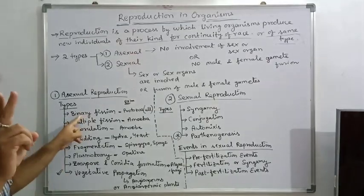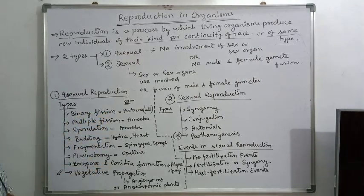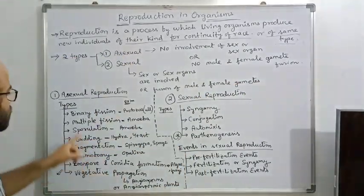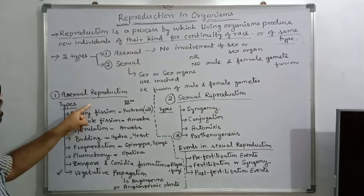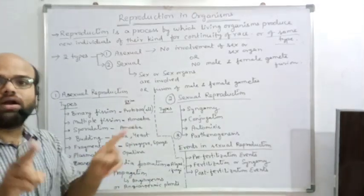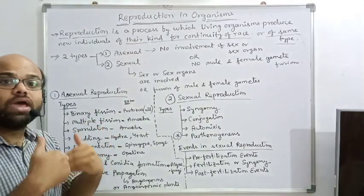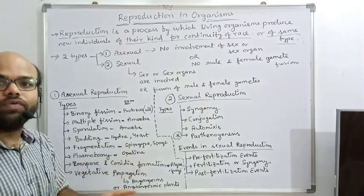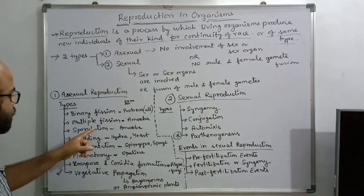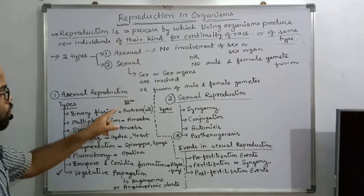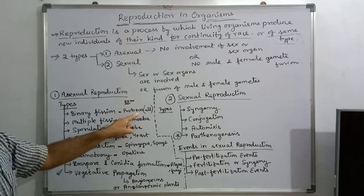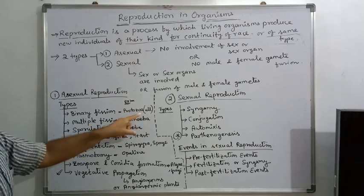Binary means two. Fission means breakdown — note that fusion means joining, while fission means breakdown. So in binary fission, a living organism can produce another living organism by breaking down itself into two parts. That is binary fission. We will understand the definition in detail in the next video. The most common example of this process of asexual reproduction is protozoa — most protozoans show binary fission.